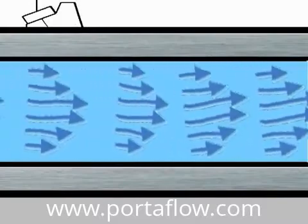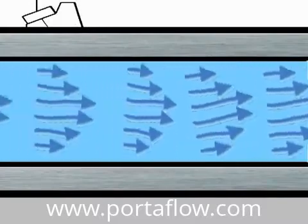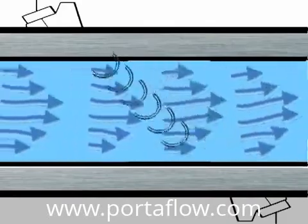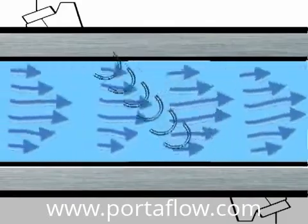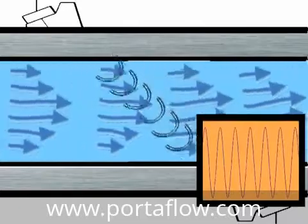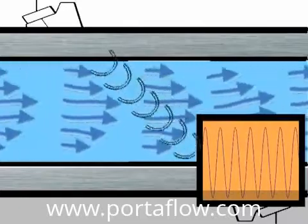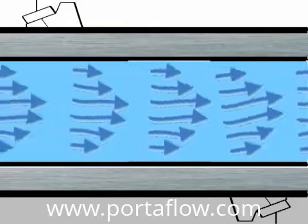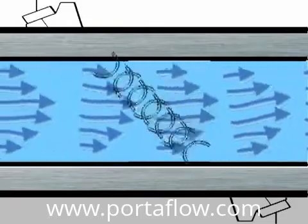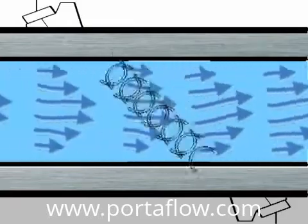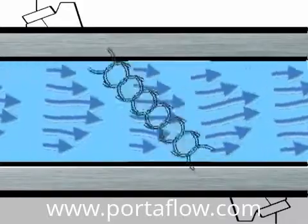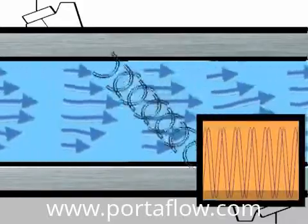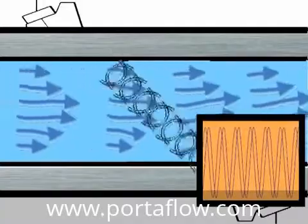Ultrasonic signals are highly directional. Providing the pipe material and the fluid in the pipe conducts ultrasonic signals, an ultrasonic signal transmitted across the pipe can be received on the other side. When signals are sent simultaneously from both sides, the signal travelling with the flow will arrive faster than the signal travelling against the flow.